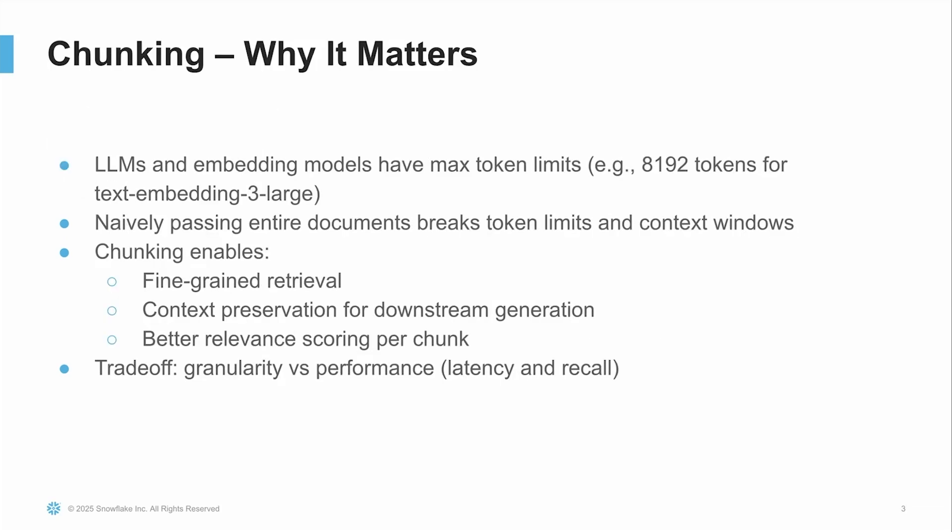Now let's talk about chunking and why it matters. One important thing to keep in mind is that LLMs and embedding models have token limits. For example, the text-embedding-3-large model maxes out at about 8,192 tokens. So if we just try to pass in an entire document without thinking it through, we'll quickly run into those limits, and that breaks the model's ability to understand or respond effectively. That's where chunking comes in.